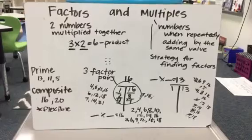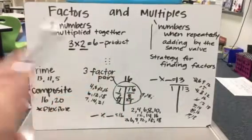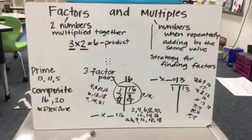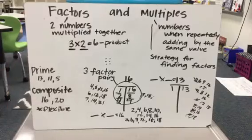So use these strategies if you need them. Multiples if you need to work on finding the factor pairs. Otherwise, if you know your multiplication facts, then you can use those to still determine if it's prime or composite.